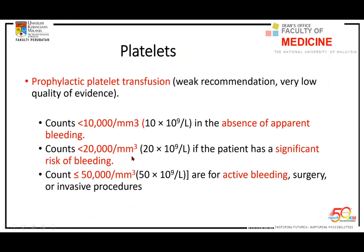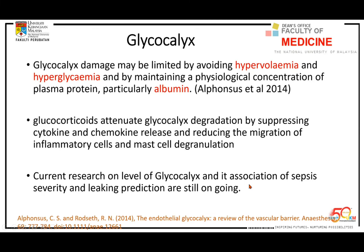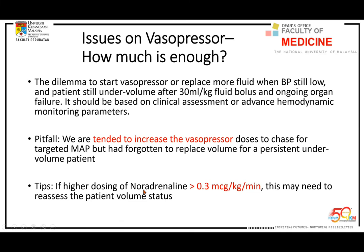Glycocalyx damage is reduced by avoiding hypervolemia — don't give so much fluid that it washes out the jelly. Hypoglycemia also destroys this layer, as does cytokine exposure. Maintaining physiological plasma protein concentration — particularly albumin — is important to maintain the glycocalyx layer. Steroids are also found to be good for reducing glycocalyx destruction, along with NSAIDs. For cardiac contractility, we can assess using ultrasound. The first-line inotrope is dobutamine, starting at 5–10 mcg/kg/min. Going beyond 15 mcg/kg/min will depress cardiac function.